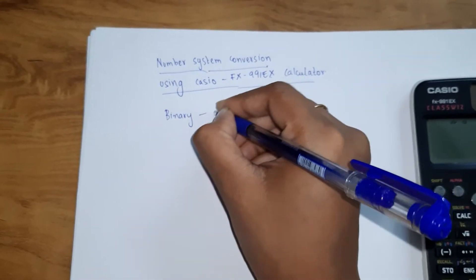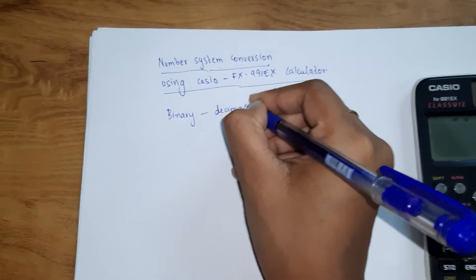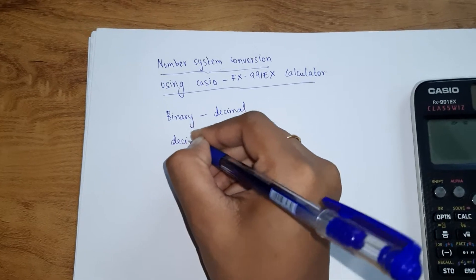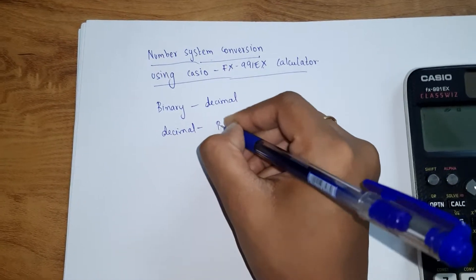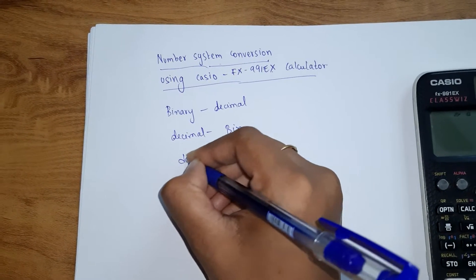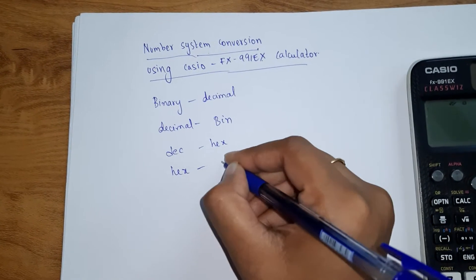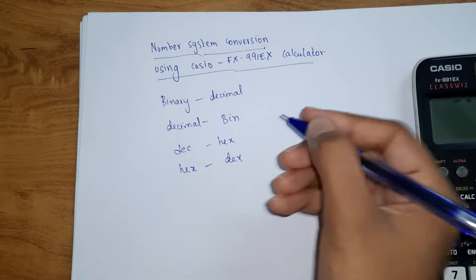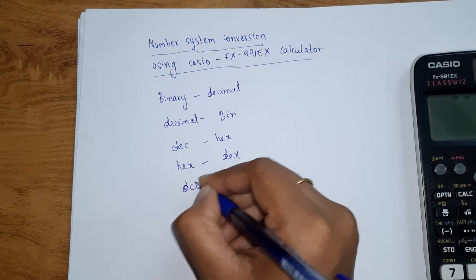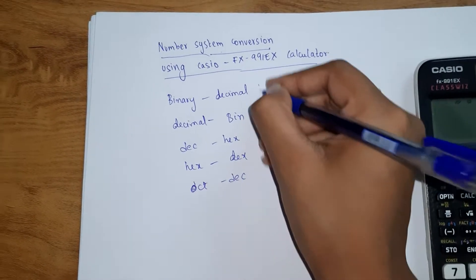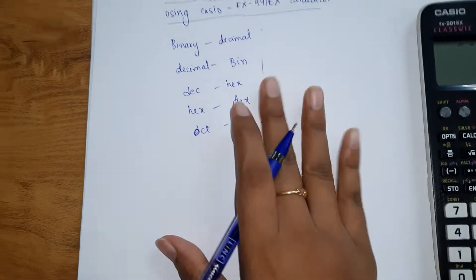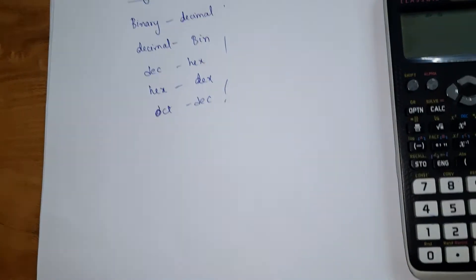So and so, octal also is there - octal to decimal, so and so, all types of different conversions. So first, for example, with one small example we will see how to do this.